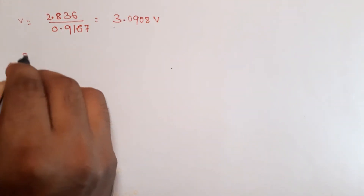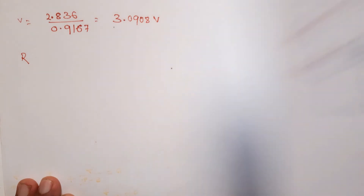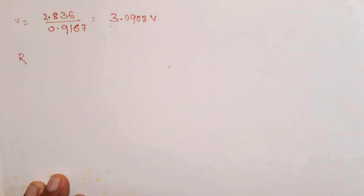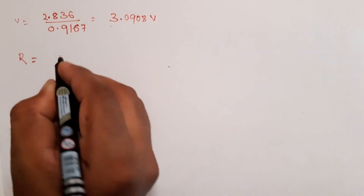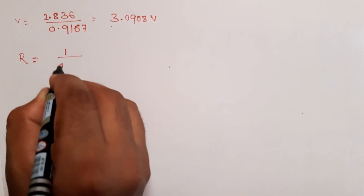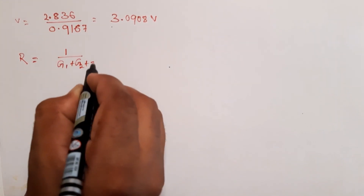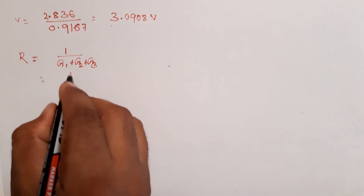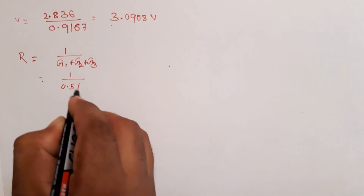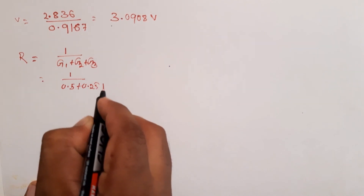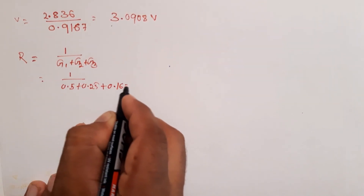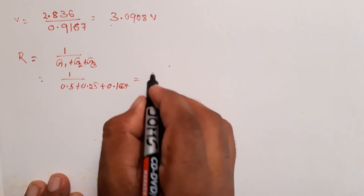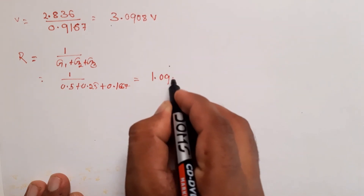For finding the equivalent resistance R, it is equal to 1 over G1 plus G2 plus G3. That is 1 over 0.5 plus 0.25 plus 0.1667, which gives us R equal to 1.0908 ohms.